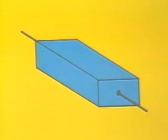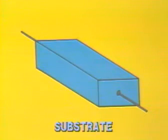Let's construct a simplified block model of a junction field effect transistor. We'll start with a block of doped silicon, in this case N-type, called the base or substrate.